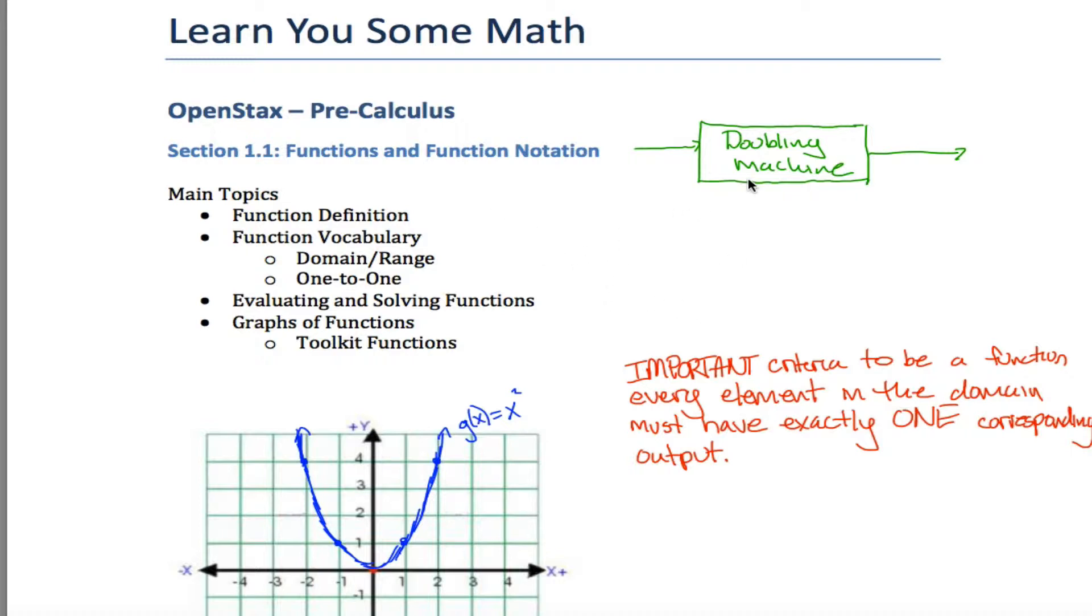In short, a function is a mathematical machine, so you can think about this image as what you think about when you think about a function. A doubling machine would be a perfectly good function, so for example, I could put the number three into my doubling machine and the number six would come out, and I could put the number negative four into my doubling machine, and then negative eight would come out.